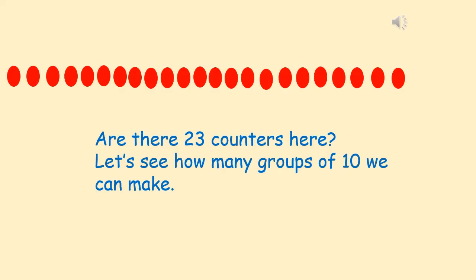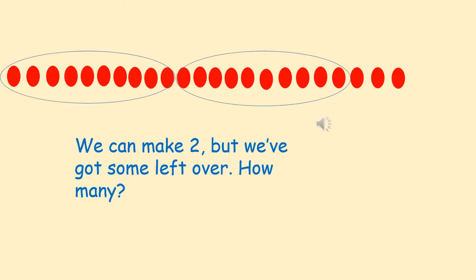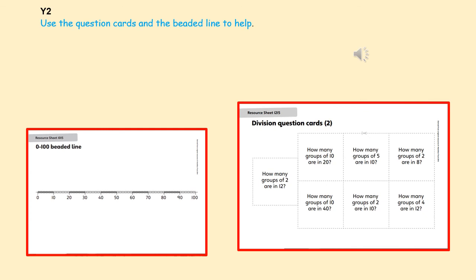I've got 23 counters here. So if you can count in 2's, that would be a lot quicker. So there are 23 counters. Great. Let's see how many groups of 10 we can make with 23 counters. So did you make 2 groups of 10? I did too. We can make 2, but we've got some left over. How many have we got left over? 1, 2, 3.